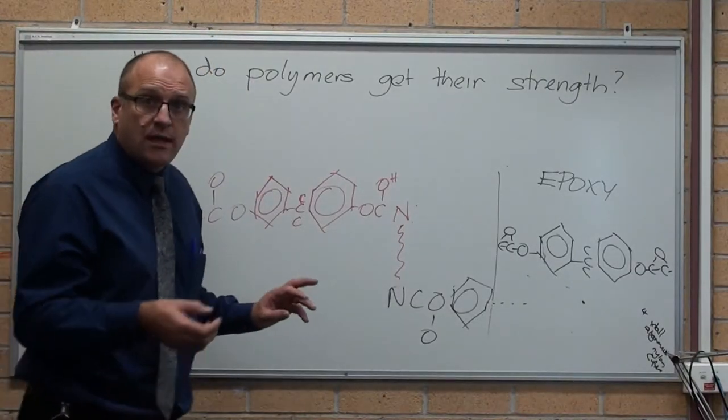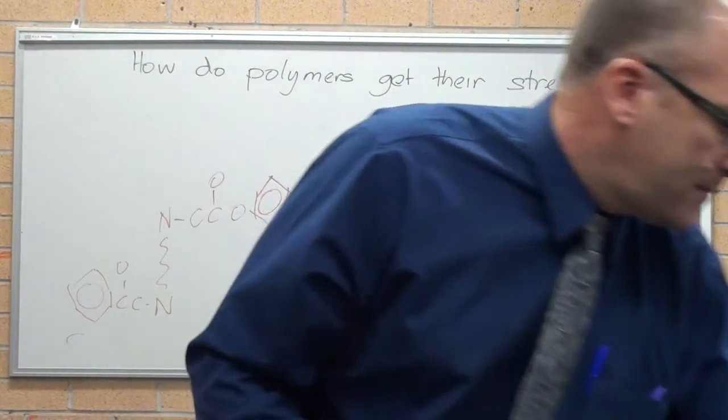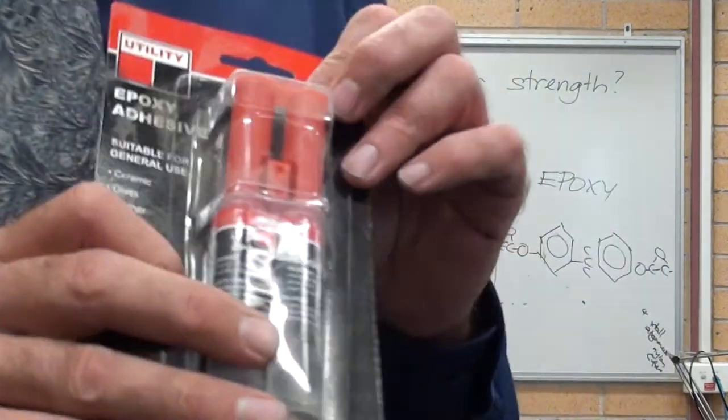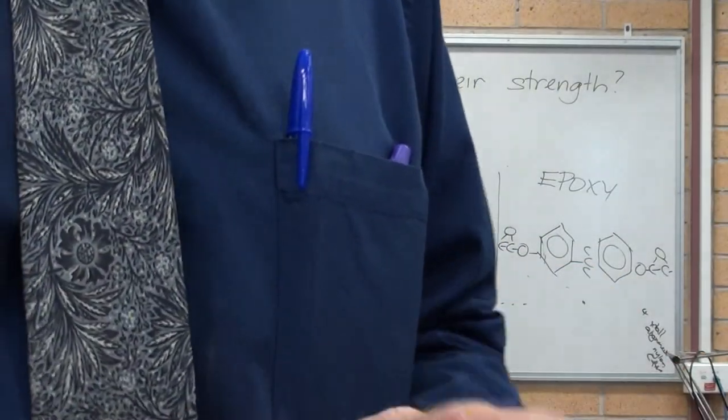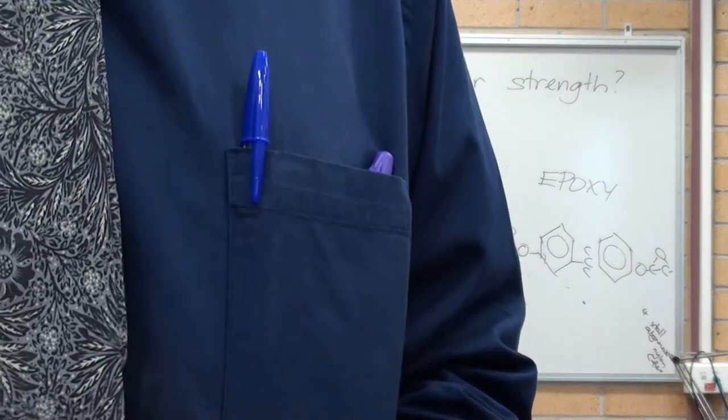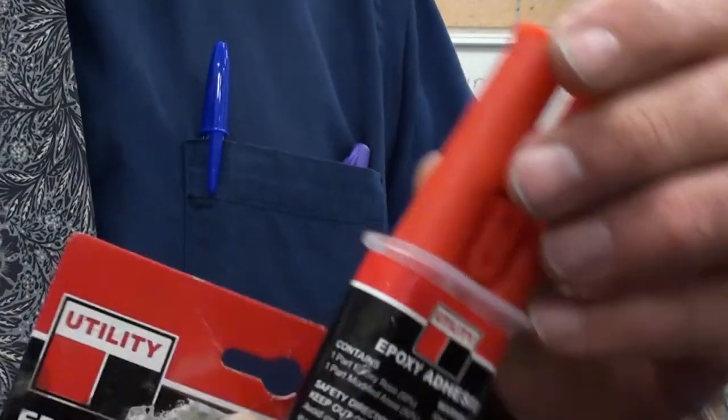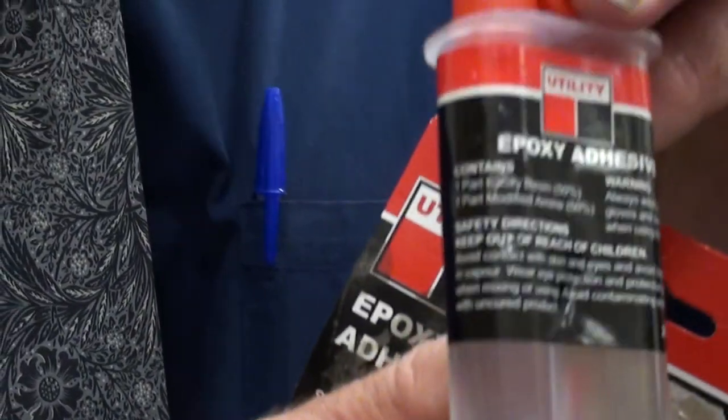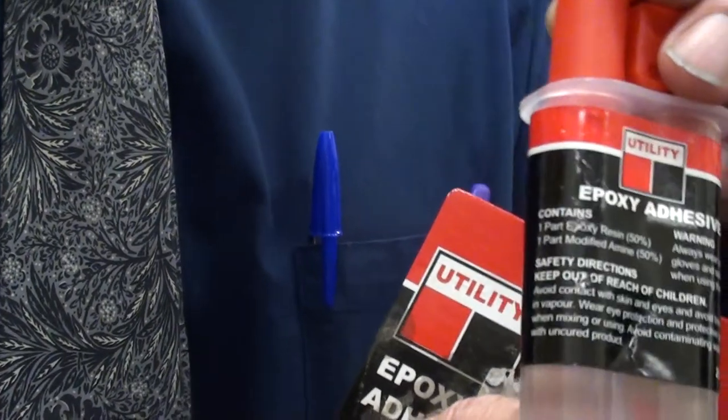Part two on cross-linking, epoxy. I've got this tube of simple epoxy I picked up at a local shop. And let me just take it out of the packet. You'll notice it comes in two parts that you break together and mix. But why I've got this here, I'll just make sure it's in focus. There it is.